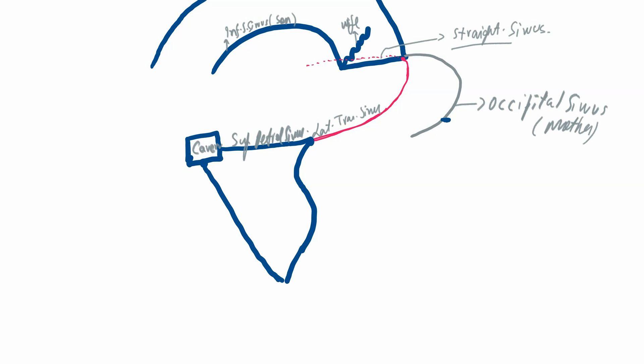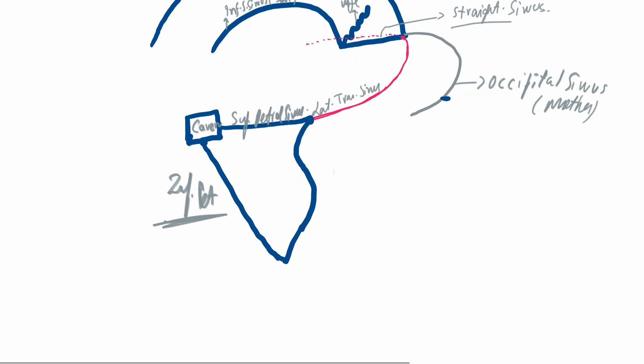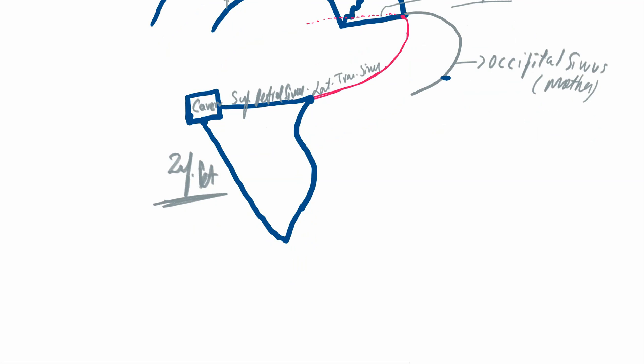After the inferior petrosal sinus marries the lateral transverse sinus in this second marriage, the lateral transverse sinus becomes straight again. The curved part is in fact called the sigmoid sinus.